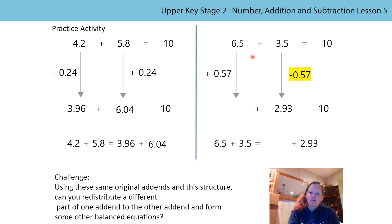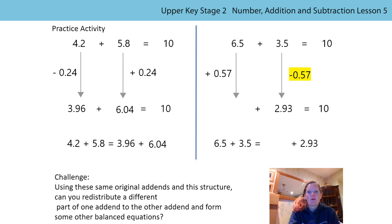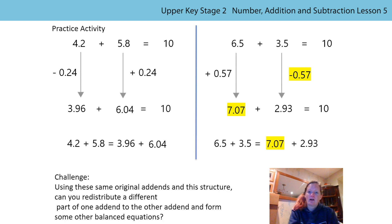So then how did you do this calculation here to fill in this missing box? Did you notice there were 5 tenths here and 5 tenths here? 5 tenths add 5 tenths is 10 tenths. And 10 tenths is the same as one whole. So we had 7 wholes in total and these 7 hundredths left. So 7.07. We can then complete our balanced equation where the left hand side and the right hand side had the same sum and that sum was 10.